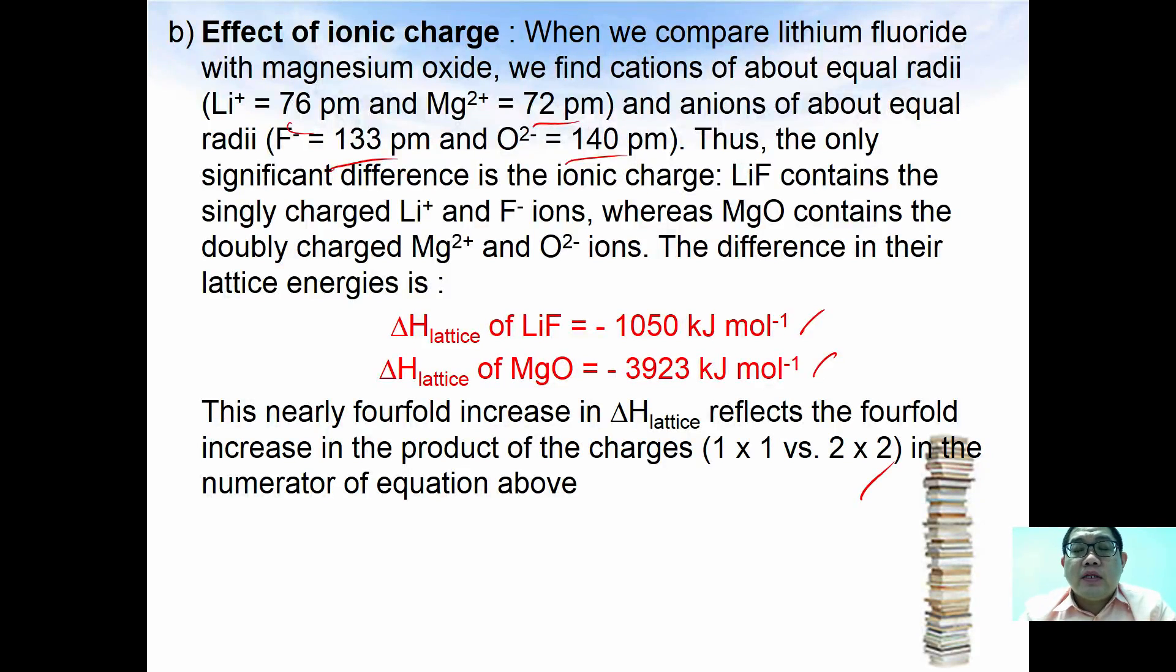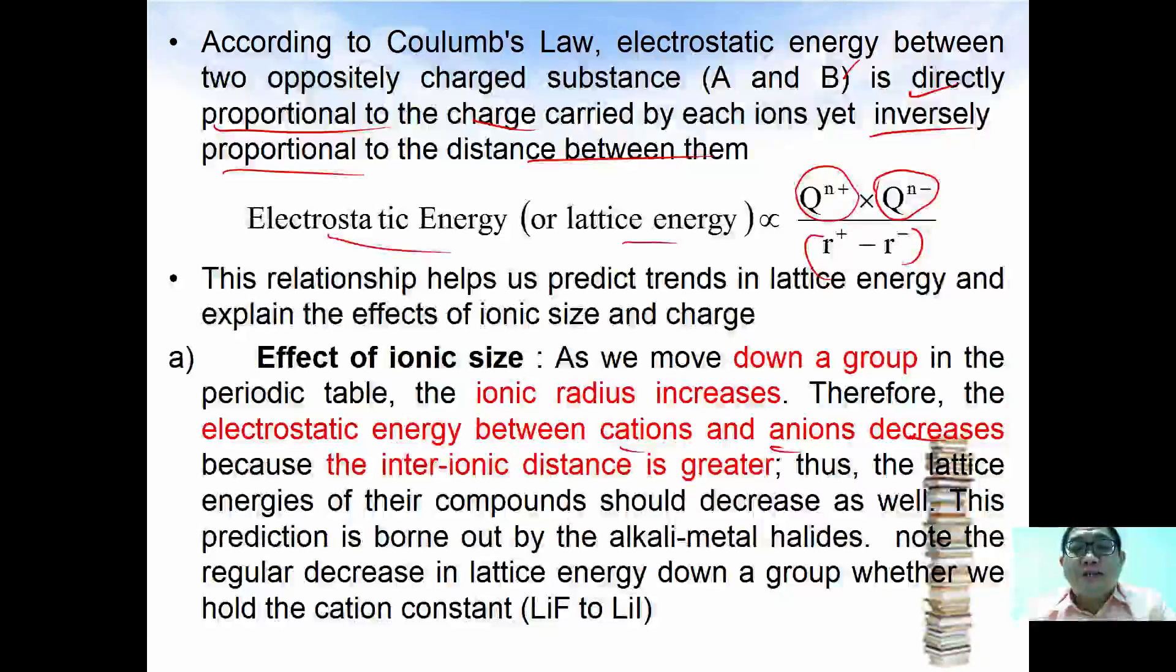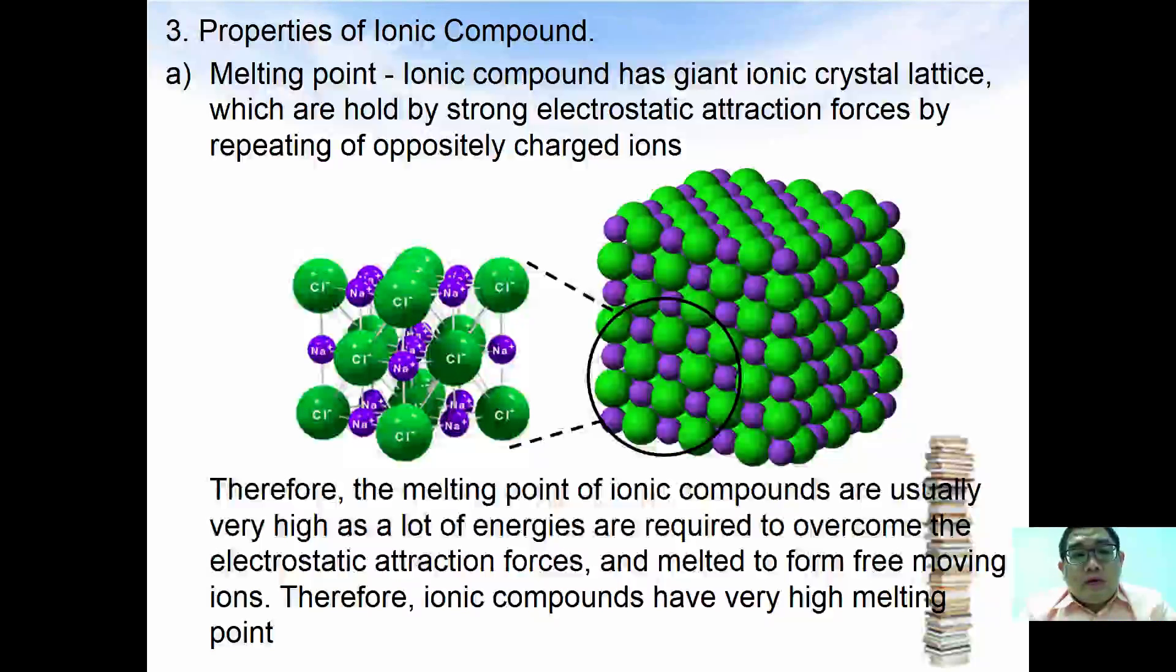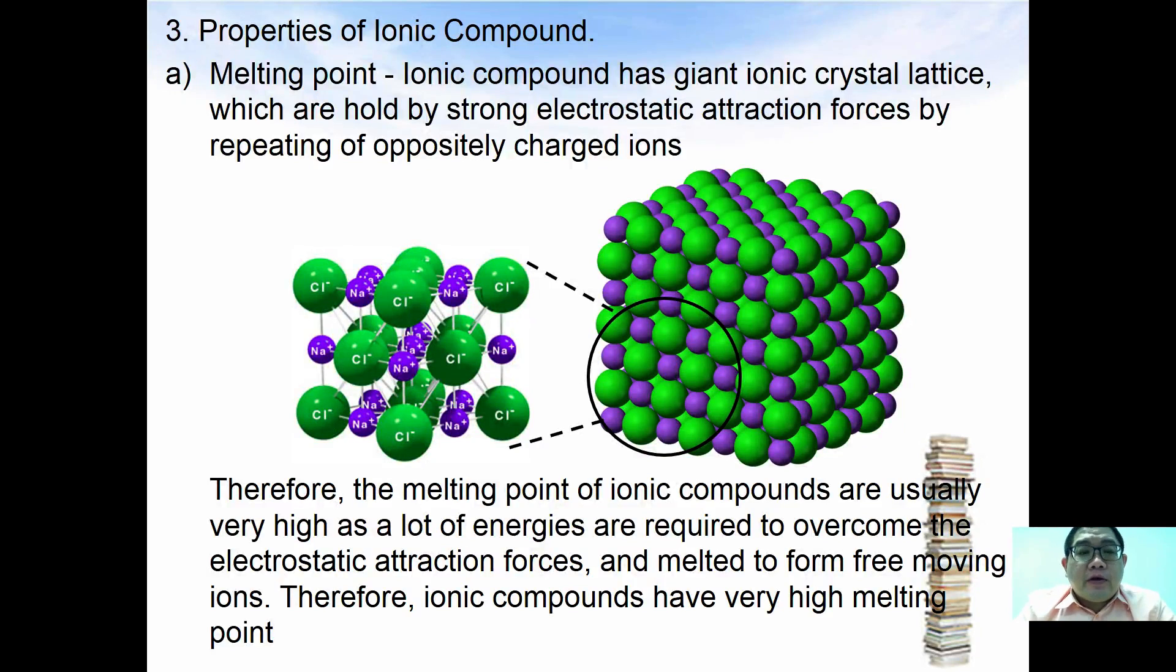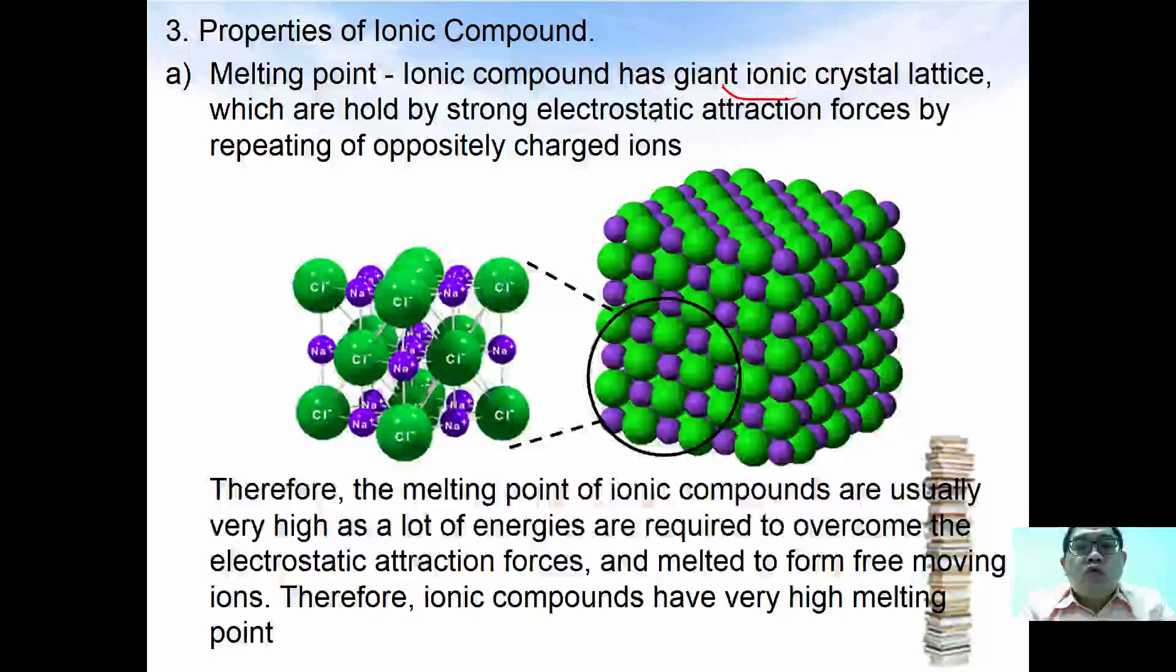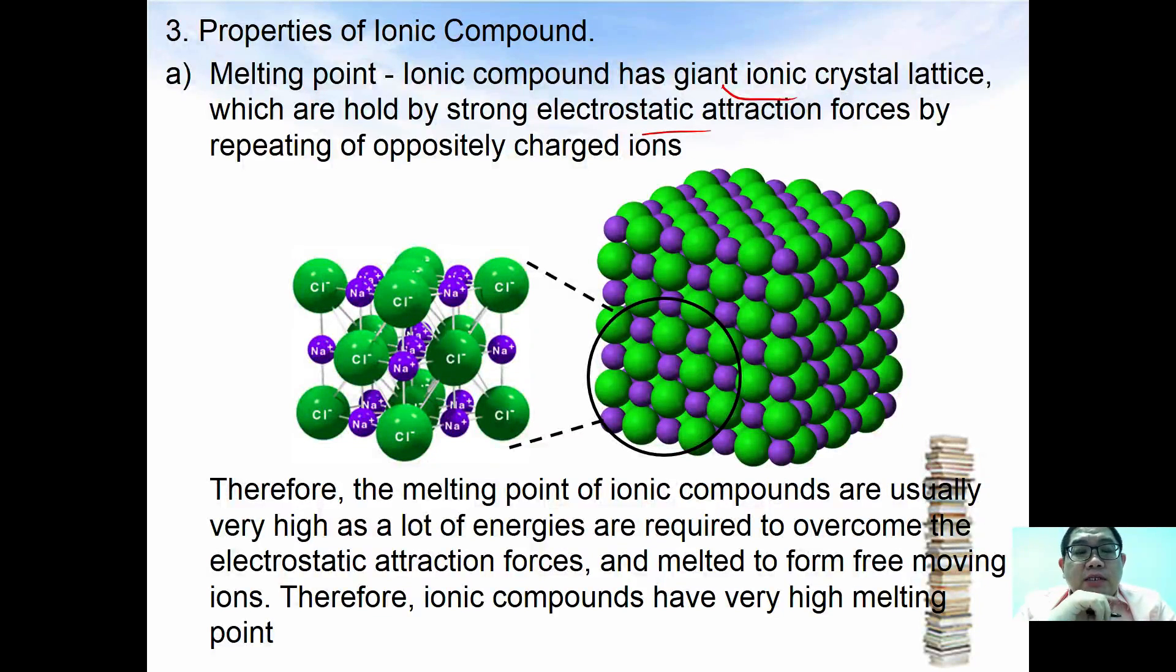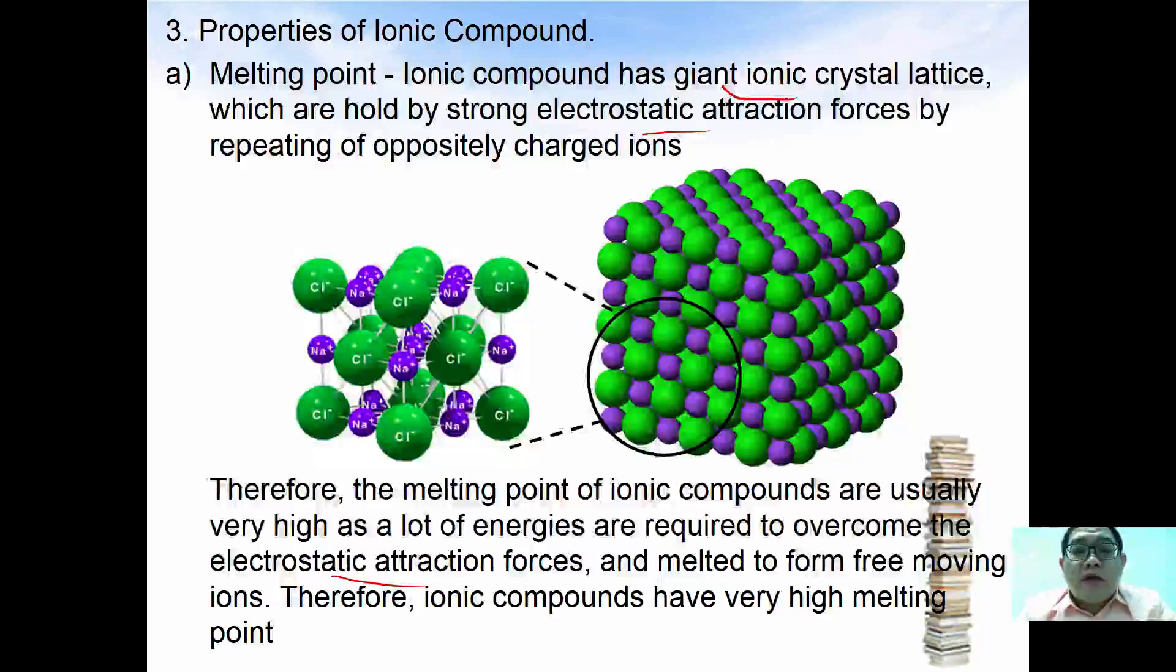Some of the properties of ionic compounds include melting points. Ionic compounds have giant ionic crystal lattices which are held by electrostatic attraction forces between the oppositely charged ions. Thus the melting point of the ionic compounds are usually very high as a lot of energy is required to overcome electrostatic attraction forces and melt to form free moving ions. Therefore ionic compounds have very high melting points.